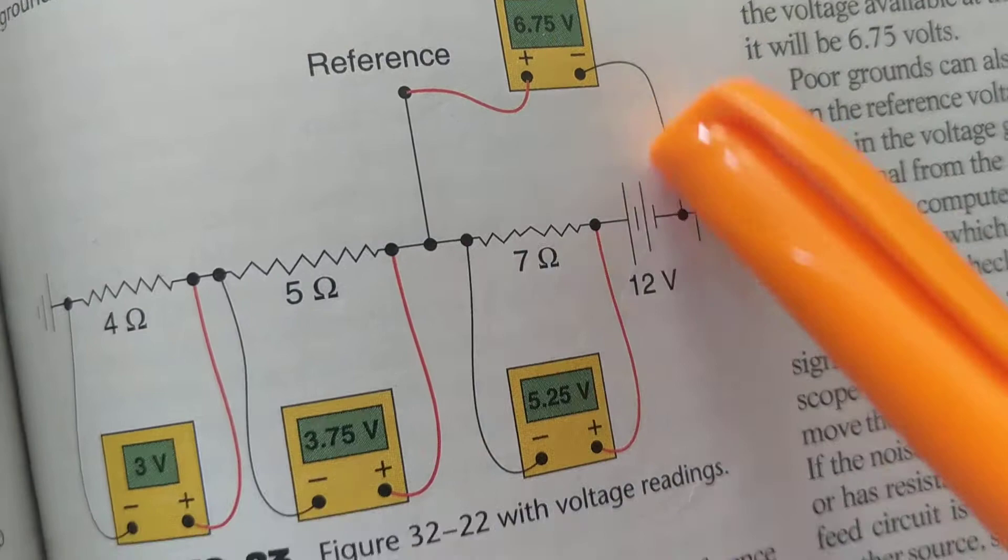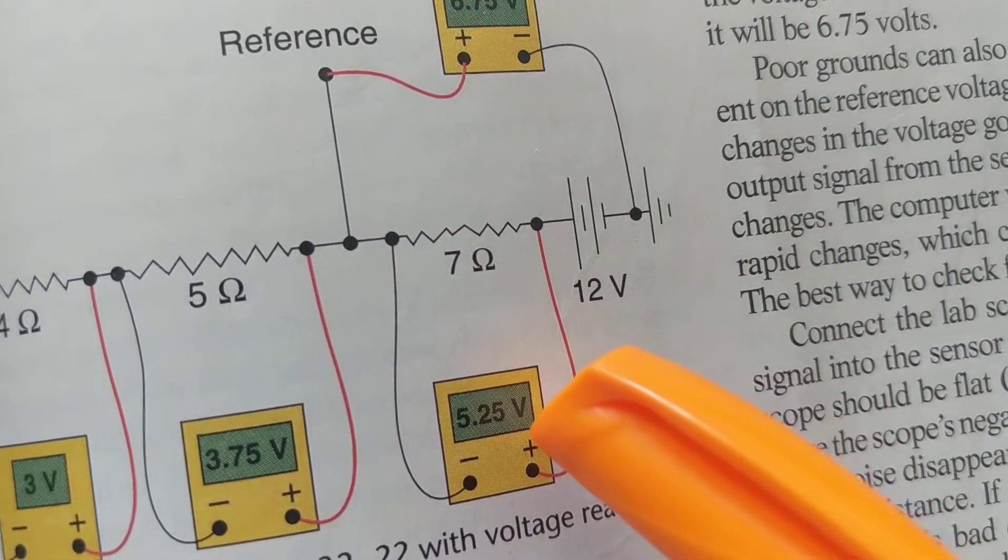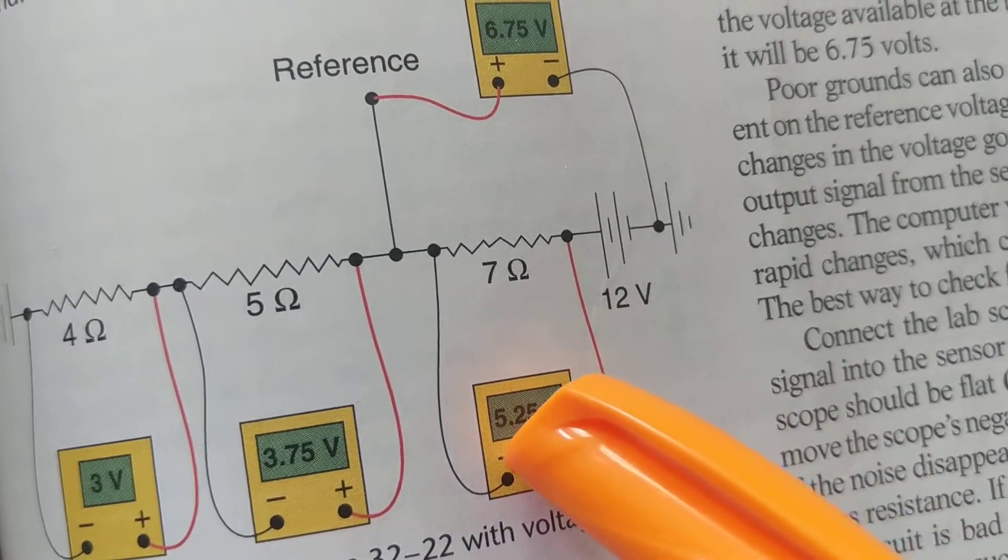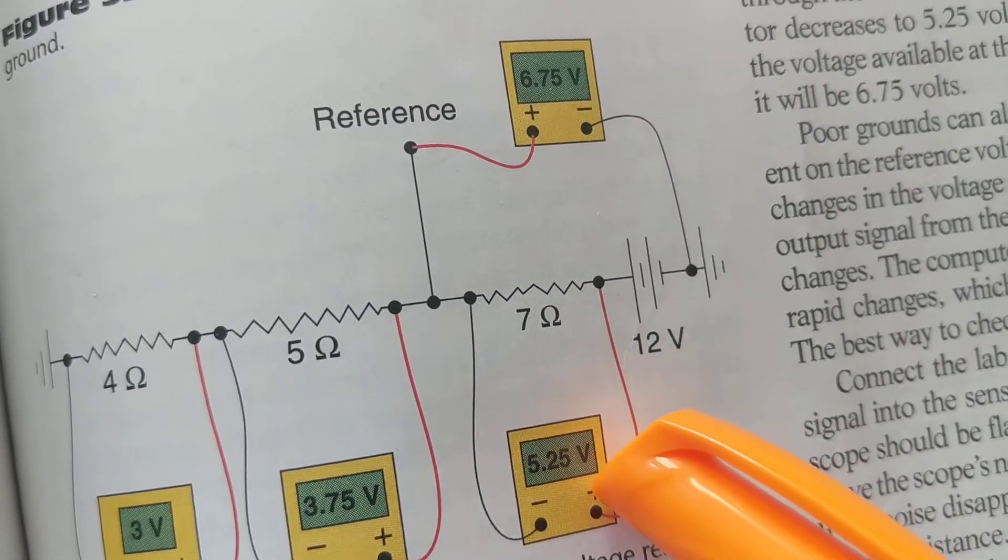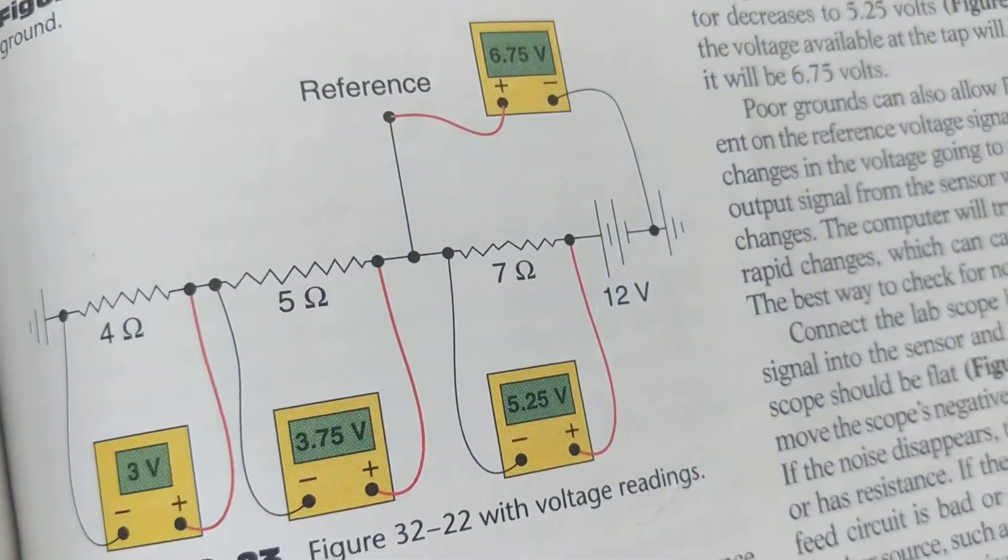Guess how much we're measuring now. 6.75 volts, as opposed to 5.25 volts. You see how it makes a difference and how important it is to make sure that you are measuring properly?